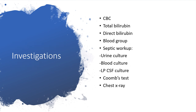Investigations include a complete blood count to determine if we are dealing with polycythemia or infection by looking at the differential count. We do total bilirubin and direct bilirubin to estimate indirect bilirubin, so we know the level of unconjugated bilirubin, which will determine the intervention. We also check blood group ABO and Rhesus to identify if incompatibility is the source of the problem.